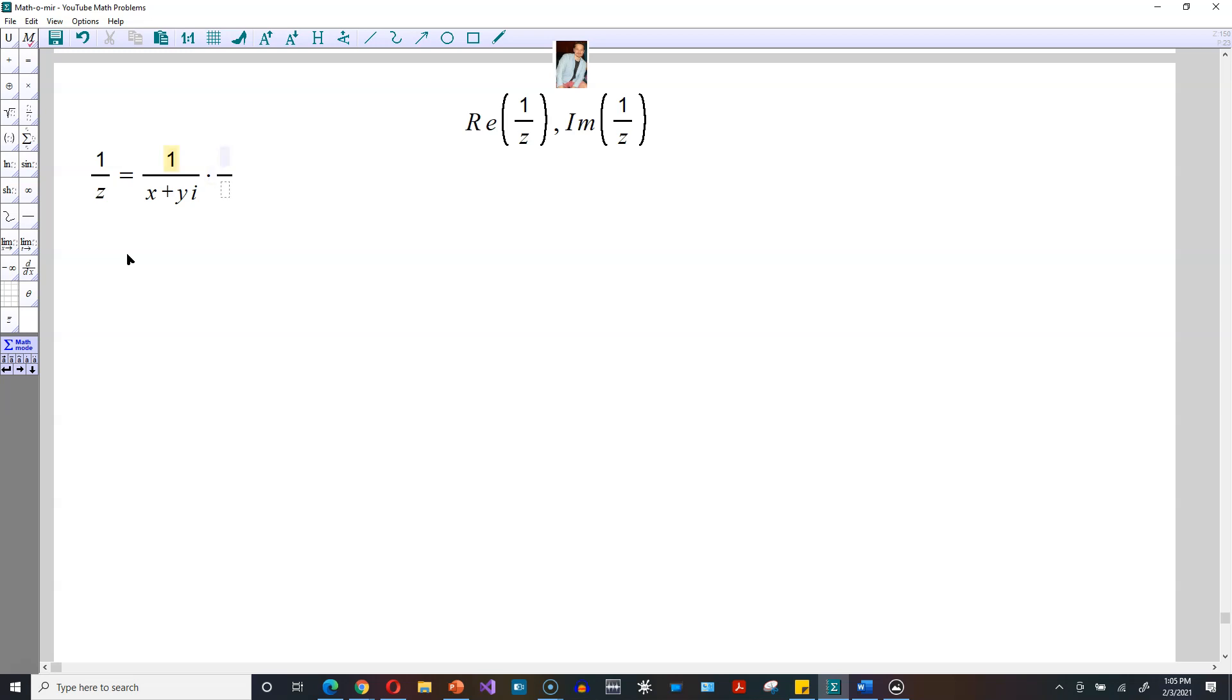Multiply by a form of the number 1, which is done here, x minus yi, which is the conjugate of x plus yi. Same thing on the bottom, x minus yi.